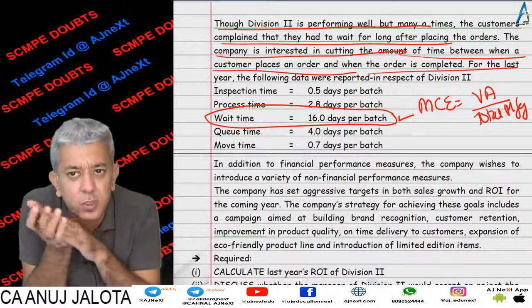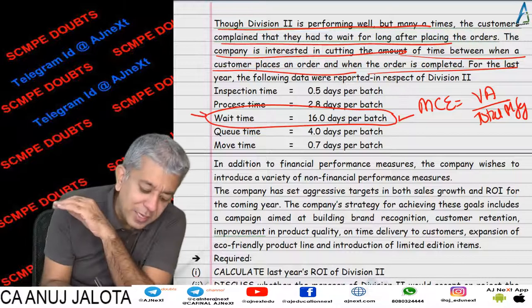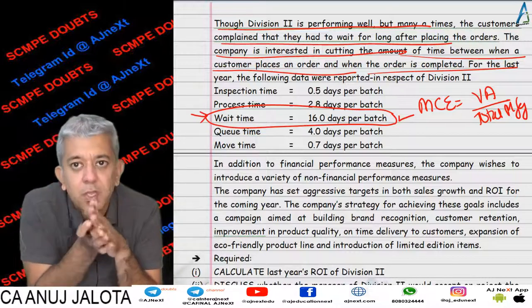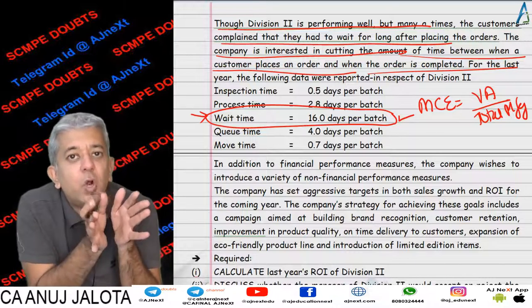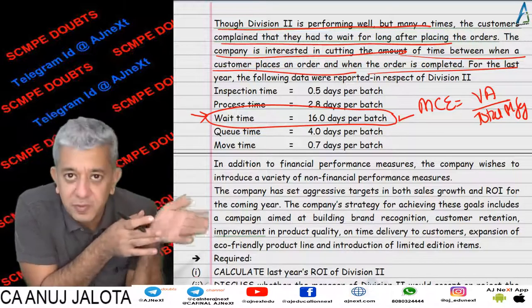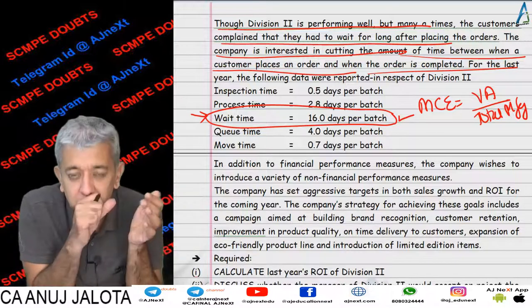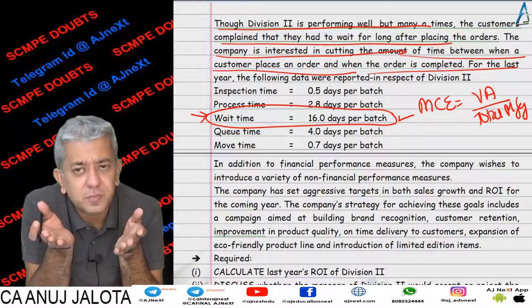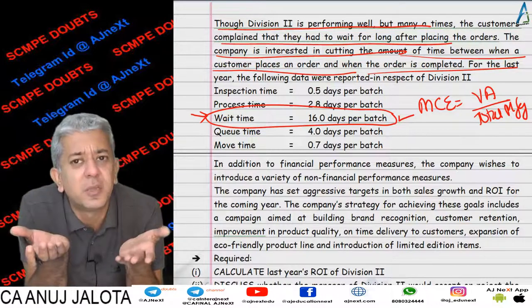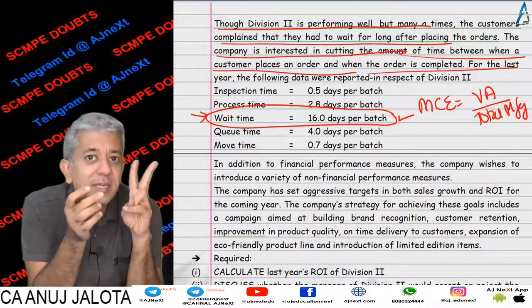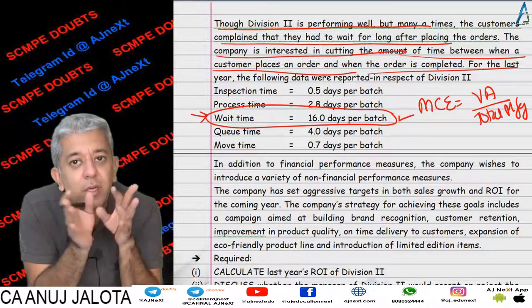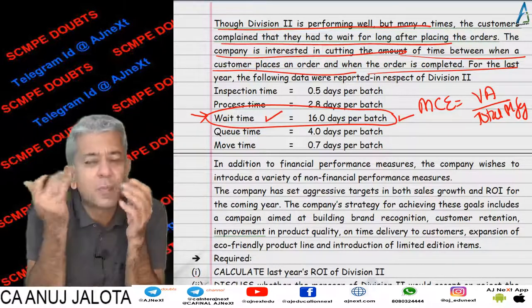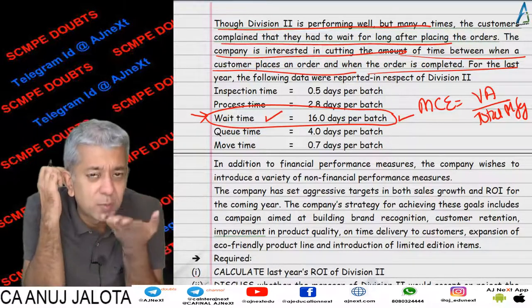They interpreted wait time as follows: suppose the customer places the order, but we have not passed that order to the factory to process. So the factory has not even started production. There is a time gap of 16 days here.